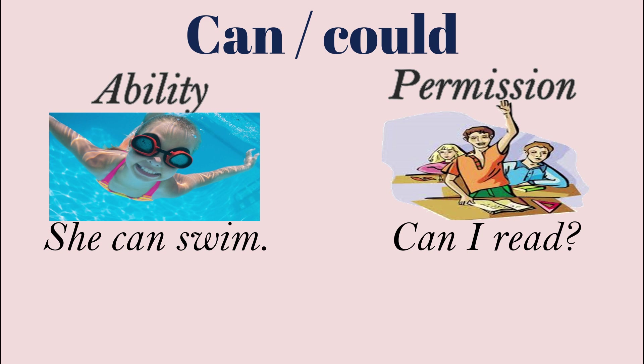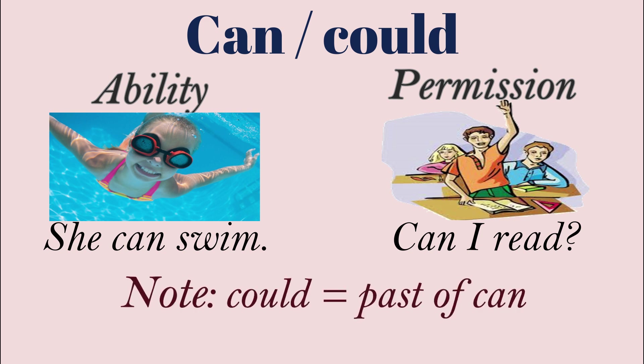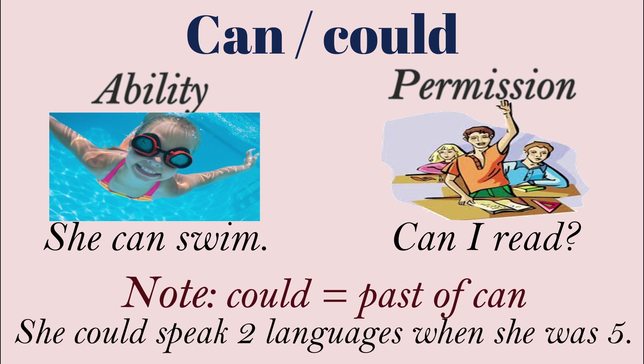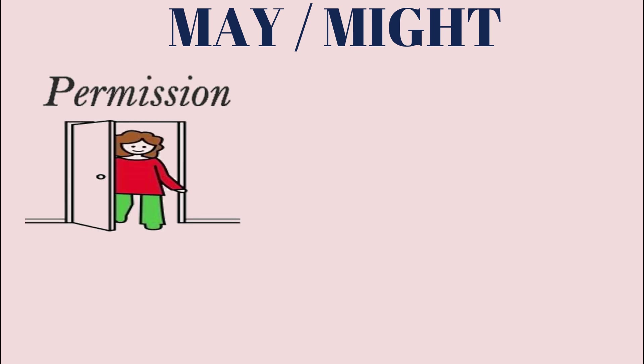Note that 'could' is the past form of 'can.' For example: 'She could speak two languages when she was five' — meaning she was already able to speak two languages at age five. 'May' and 'might' can express permission: if you want permission to enter an office or a house, you knock and say 'May I come in?'